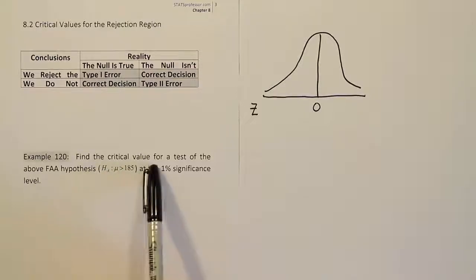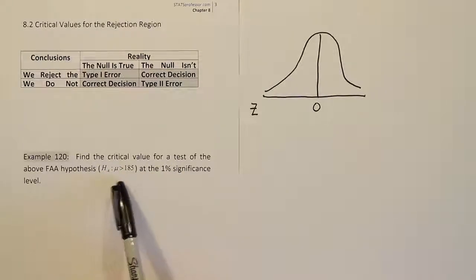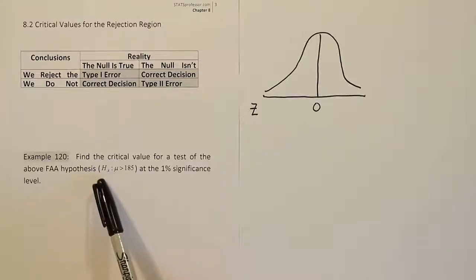So when you're doing a critical value for a hypothesis test, there are two things you want to know. You certainly want to know the alternative hypothesis, and that's why that's given to us. And we also want to know the significance level for the problem.